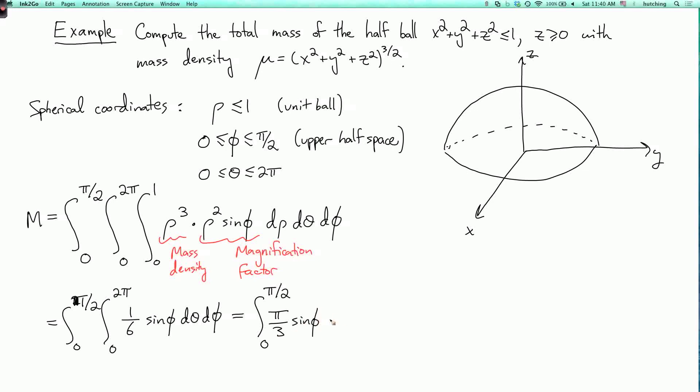The sine phi, d phi. So this is minus pi over 3 cosine phi. Evaluate it at phi equals pi over 2 and phi equals 0.